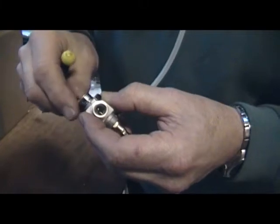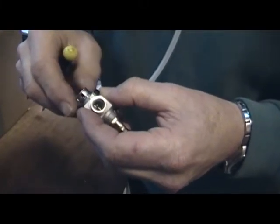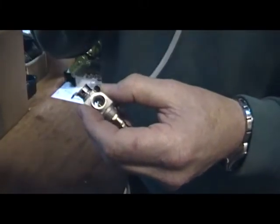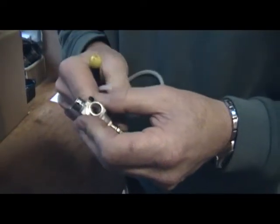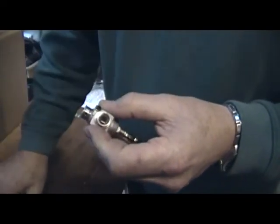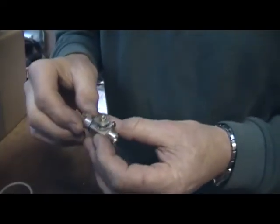When the throttle is fully open, it's the main needle that's operating. When it's in that eighth position, that's when it's operating on the idle needle.